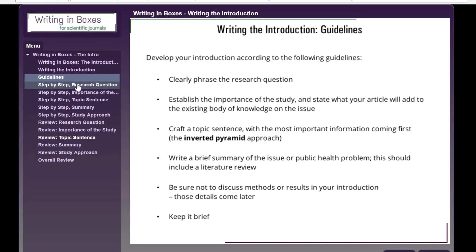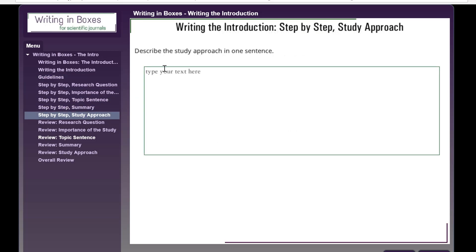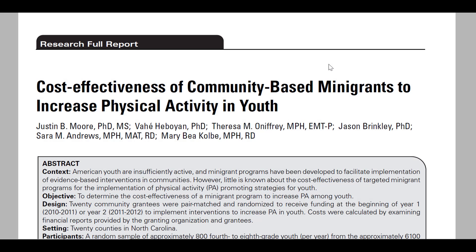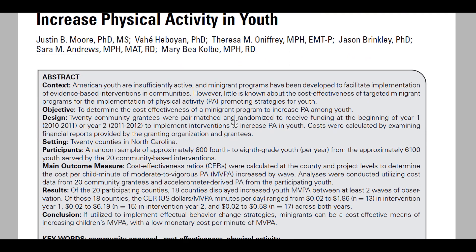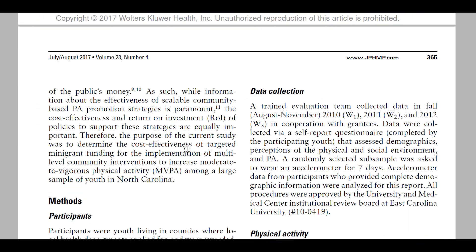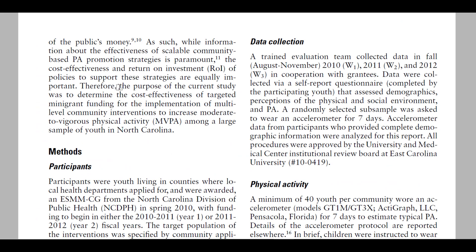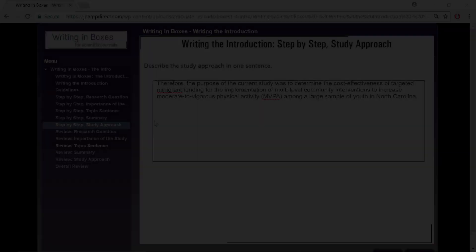The module will then continue by going step-by-step through the section. For example, the fifth step shown here for the introduction is to describe the study approach. If we take a look at this article published in JPHMP called Cost Effectiveness of Community-Based Mini-Grants to Increase Physical Activity in Youth, we can see that the study approach is shown here, starting with the purpose of the current study.